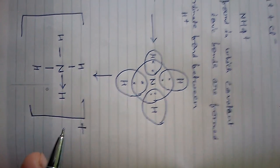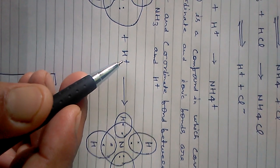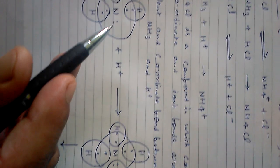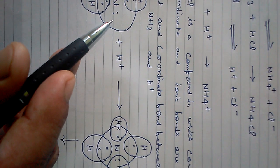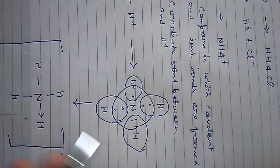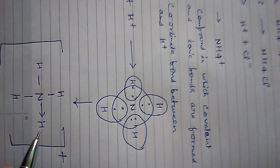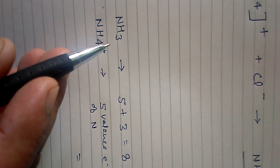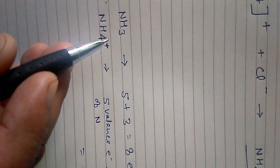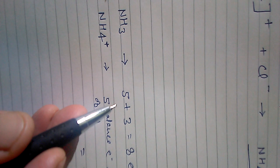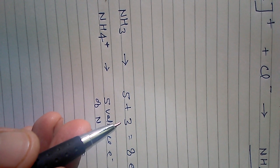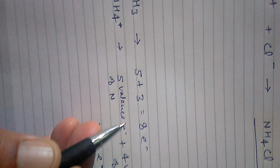One question that may come to your mind: why is the plus sign appearing here? What is happening is that H⁺ comes with a positive charge and gets bonded using both electrons of nitrogen, so the plus charge comes onto the overall nitrogen. Another way to understand this: in NH₃, how many valence electrons are there? Five in nitrogen and three in the three hydrogens, so total valence electrons are eight.